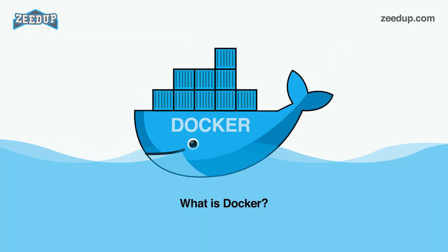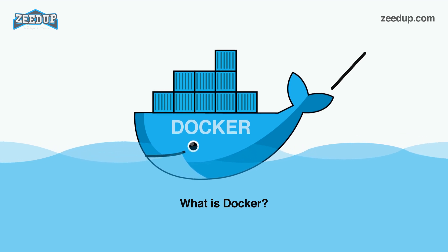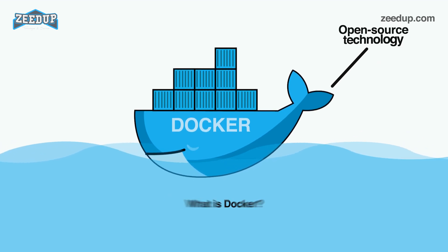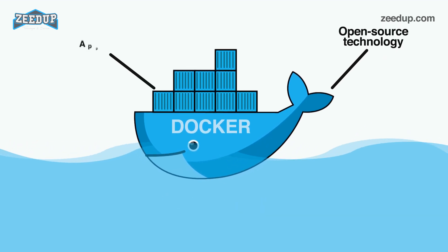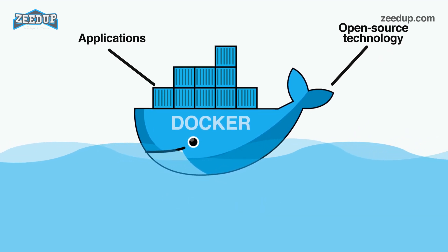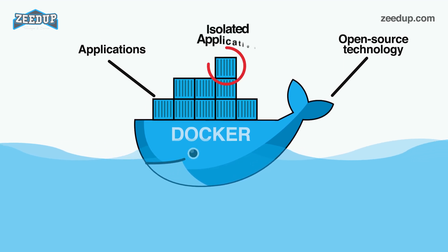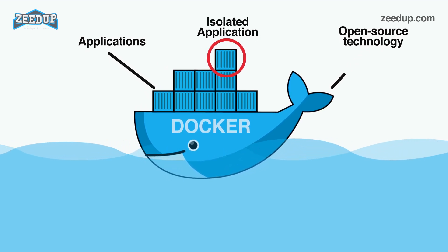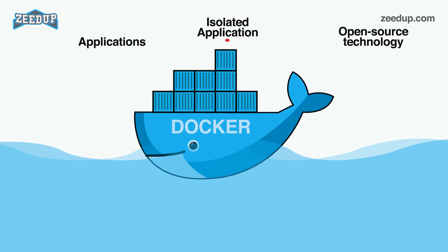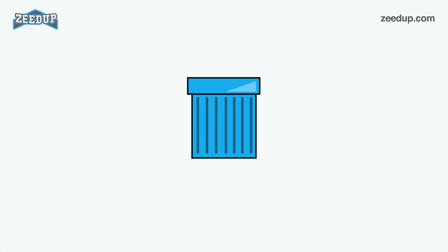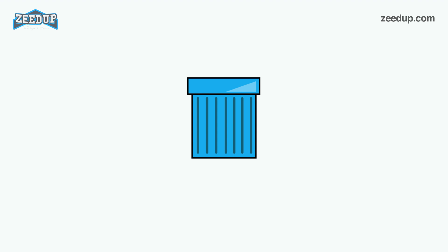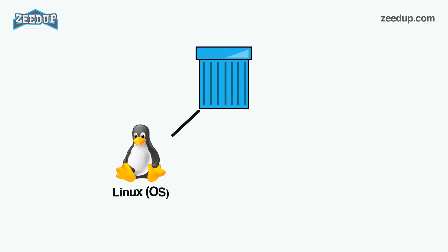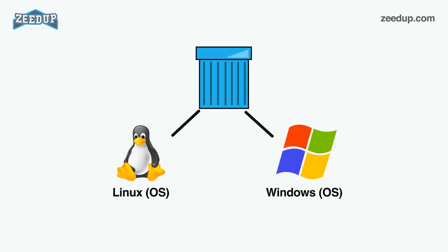What is Docker? Plainly put, Docker is an open-source technology used mostly for developing, shipping, and running applications. With it, you can isolate applications from their underlying infrastructure so that software delivery is faster than ever. Docker's main benefit is to package applications in containers, so they're portable for any system running the Linux OS or Windows OS.